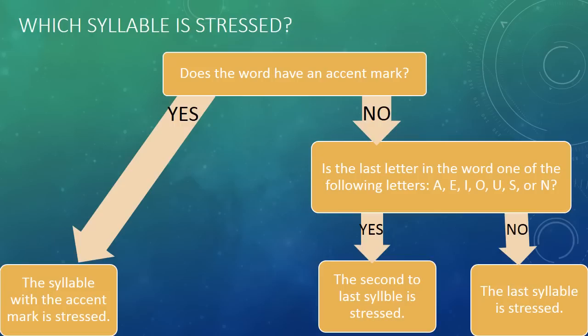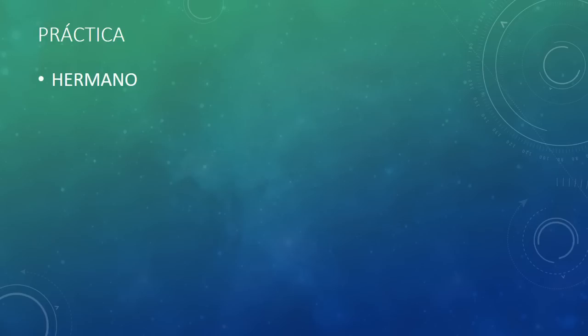So to summarize: if a word has an accent mark, that syllable gets stressed. If it doesn't, and the word ends in A, E, I, O, U, S, or N, the second to last syllable is stressed. If it ends in any other consonant, or Y, then the last syllable gets stressed. Let's do some practice. I'm going to show a word, and then you tell me which syllable gets stressed. Let's start with this one — it ends in an O, so there's no accent mark, and since it ends in a vowel, the second to last syllable is stressed. Hermano means brother.